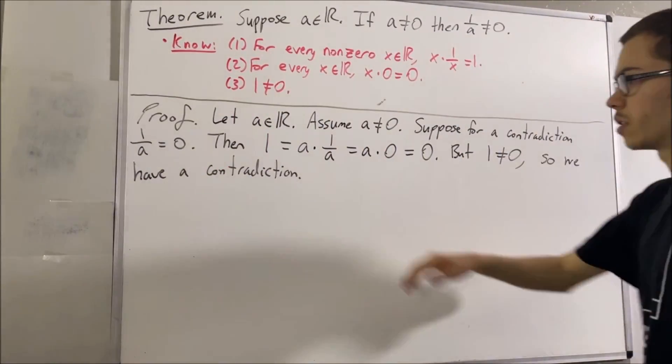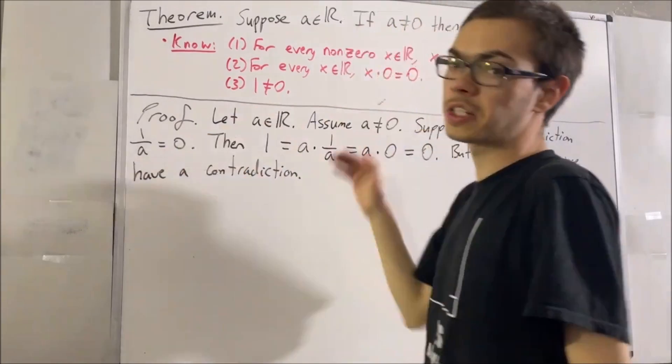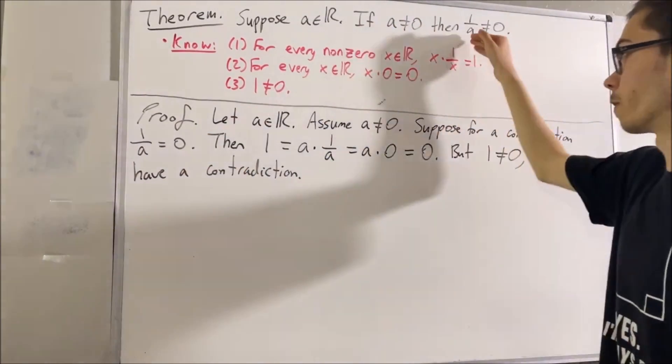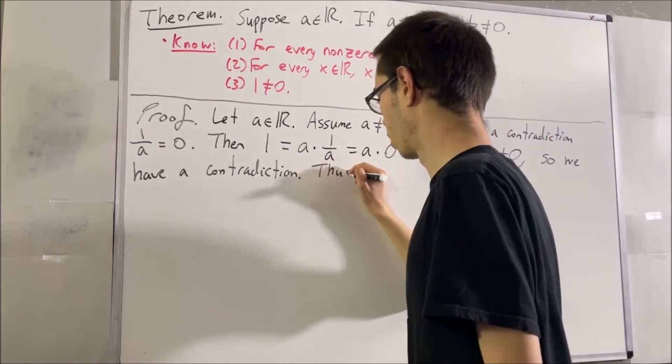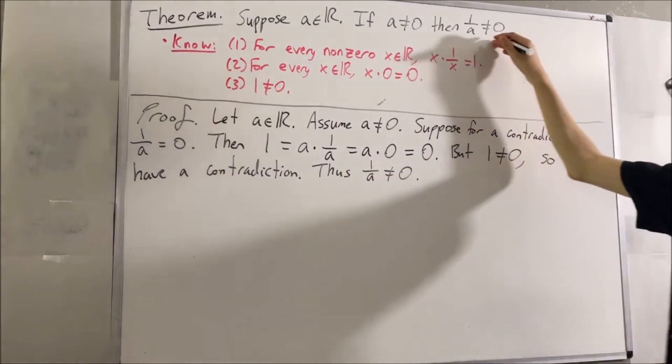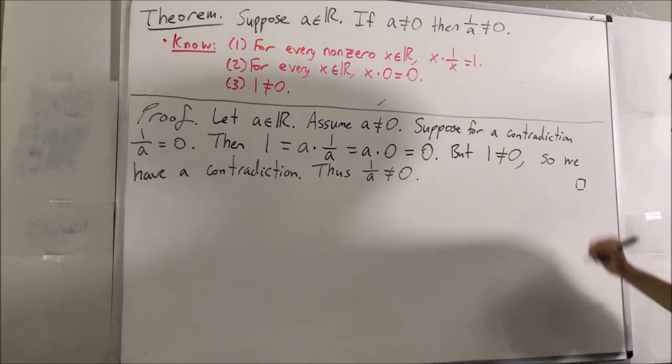Our assumption that one over A is equal to zero led us to this contradiction, so we must instead have that one over A is not equal to zero. That's exactly what we wanted to prove, so this completes the proof.